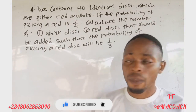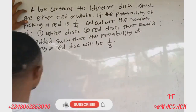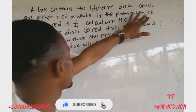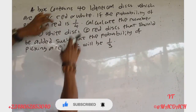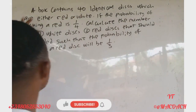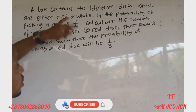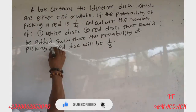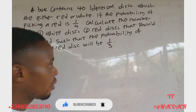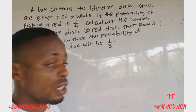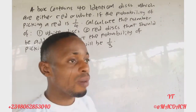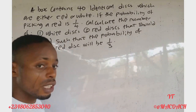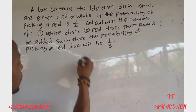Okay, let's go. Here is the question we are solving today. Consider that a bag contains 40 identical disks which are either red or white. If the probability of picking a red disk is one over four, calculate: question one — the number of white disks; question two — the number of red disks that should be added so that the probability of picking a red disk will be one over three.